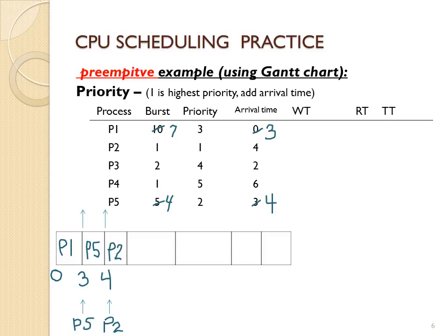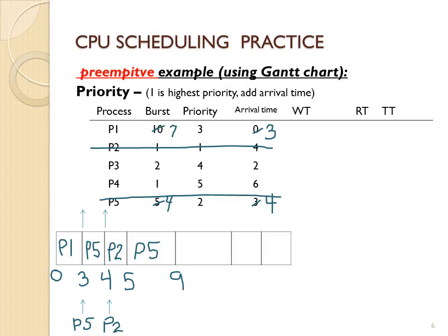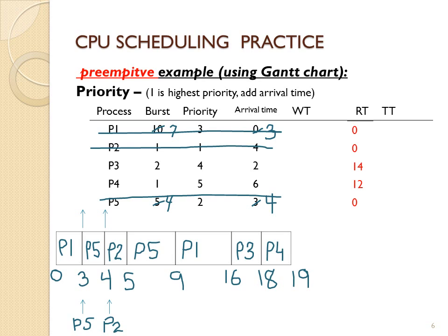It doesn't matter how long P2's CPU burst is because P2 is the highest priority, so nothing will preempt P2 and P2 will finish at time five. The current time is five and in our ready queue we have P3, P1, and P5. We pick the one with the highest priority, which is P5, and P5 will finish at time nine. Now the current time is nine and all processes are in the ready queue, so we do priority-based scheduling: P1 finishes at time 16, P3 finishes at time 18, and P4 finishes at time 19.